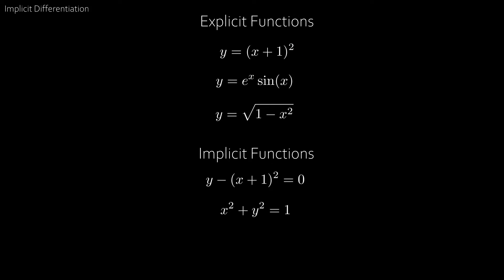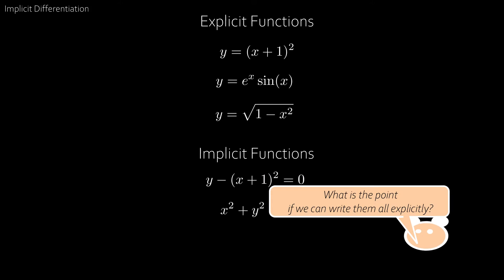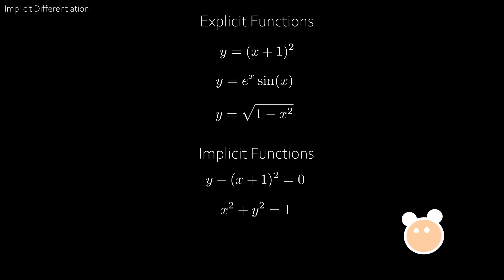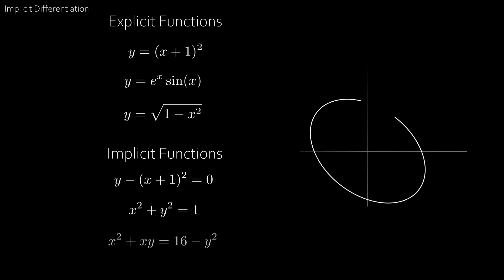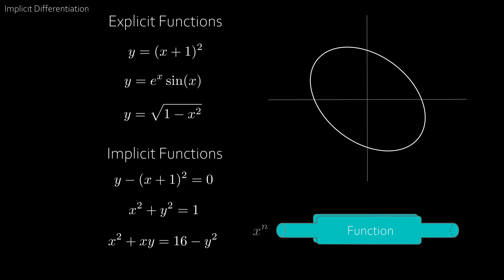Another is x squared plus y squared equal to 1, which is an implicit form of the unit circle. But now you're probably thinking, what is the point of implicit functions if I can just write them all explicitly? Well actually, there are some functions which can never be written explicitly. For example, the elliptic equation x squared plus xy equal to 16 minus y squared. No matter how hard you try and rearrange, you'll never get y equal to something. But in this case, y still acts as a function of x. That is, if we input some x, we still get an output for y.